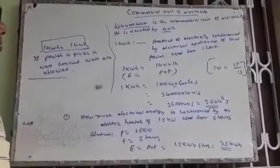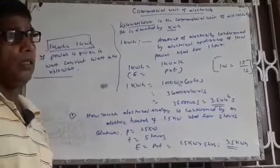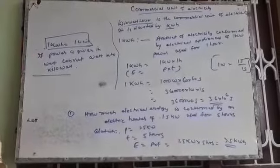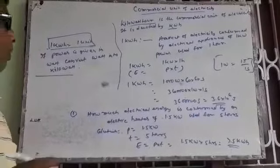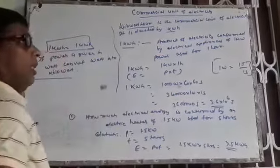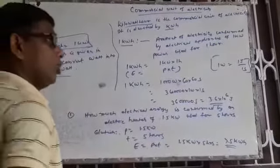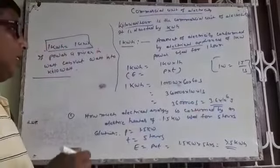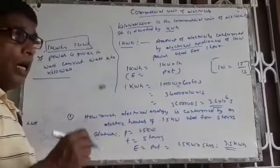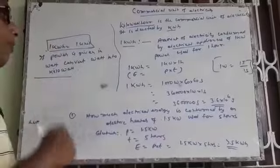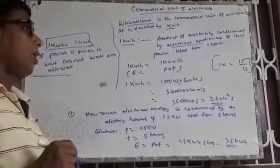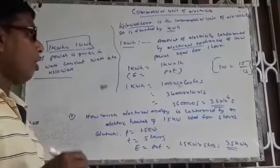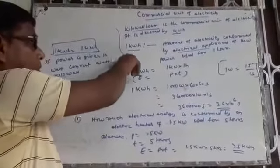What is the meaning of one kilowatt hour? One kilowatt hour is that amount of electricity or energy consumed by electrical appliances of one kilowatt used for one hour. This means if there is a single electrical appliance having power one kilowatt, and if it is used for one hour, the energy consumed is one kilowatt hour.